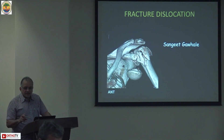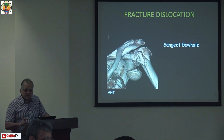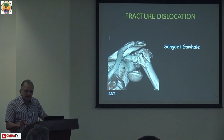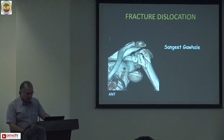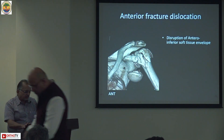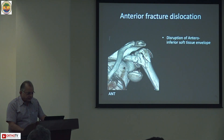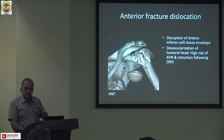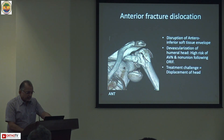I will be talking on two entities: the anterior fracture dislocation and the posterior fracture dislocation, not the neglected ones - these are the fresh ones. The problem with anterior fracture dislocation is it disrupts the antero-inferior soft tissue envelope, which causes devascularization of the humeral head. That is why, compared to posterior dislocation, anterior dislocation has a higher rate of avascular necrosis.